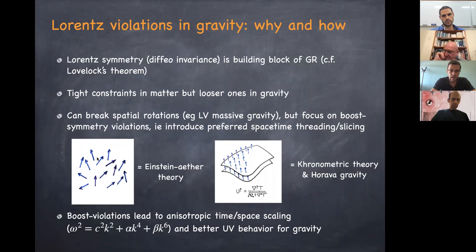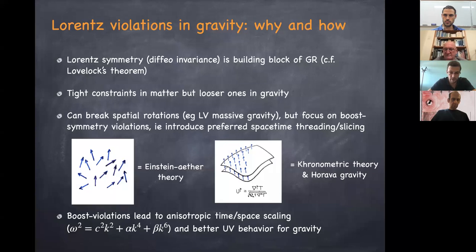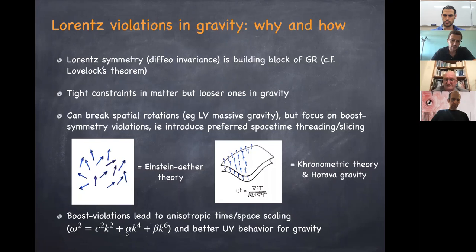When you introduce violations of boost symmetry, you necessarily have anisotropic scaling of space and time. The dispersion relation for the graviton is no longer linear: instead of ω proportional to k, you have something like ω² = k² plus higher-order corrections in the wave numbers but not in the frequency. This already shows why the concept of a black hole is complicated in this theory — the group velocity corresponding to this dispersion relation diverges in the UV, so you have signals that propagate at infinite speeds, at least in the UV limit.